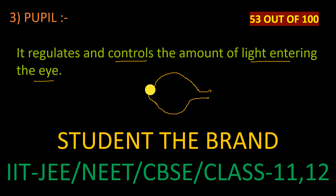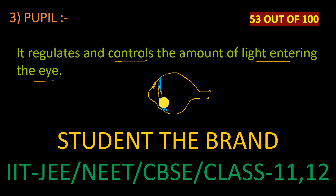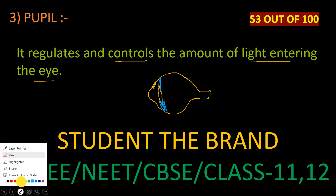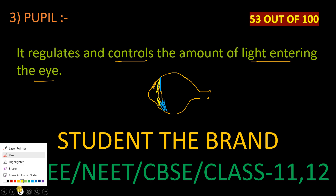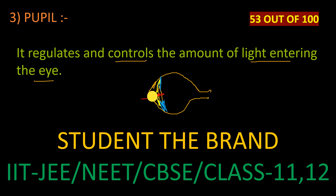Here I'm considering the cornea, and the ciliary muscles here. If you consider the eye like this, the gap — whatever gap you are considering right here — that gap is the pupil. The red color gap is the pupil. Through this, light will enter.